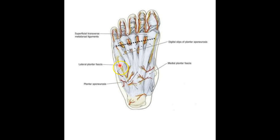The lateral and medial plantar fascia are the weakest tissue structures of the entire plantar fascia. The lateral plantar fascia contains the abductor and flexor digiti minimi muscles. The central slip contains many muscles including the flexor digitorum brevis, the tendons of the flexor hallucis longus, flexor digitorum longus, the quadratus plantae, the lumbricals, and the adductor hallucis. Medially, you get the abductor hallucis, flexor hallucis brevis, the tendon of flexor hallucis longus, along with the medial plantar nerve and vessels.